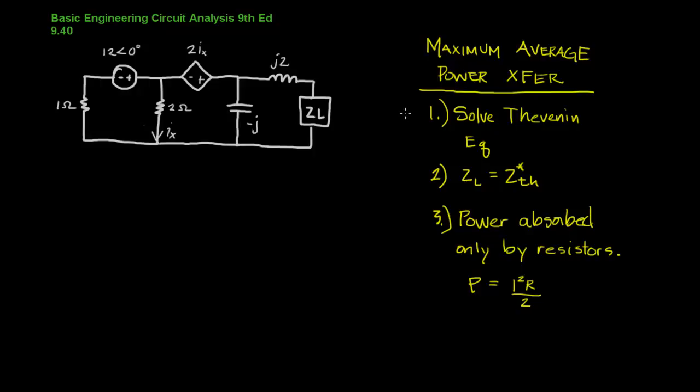So our steps are very similar. We're going to solve for the Thevenin equivalent. We are working with impedances now rather than resistance and we have a very similar relationship, slightly different. The load impedance is the complex conjugate of the Thevenin impedance. And that whole idea plays out especially when we actually calculate the power. You'll find that the power absorbed in the load is only absorbed by the resistors in an RCL network.